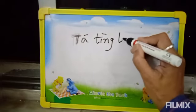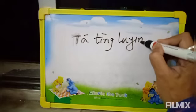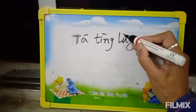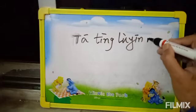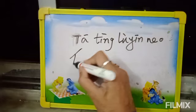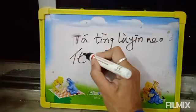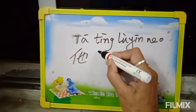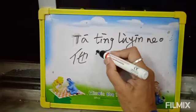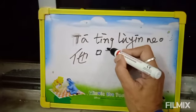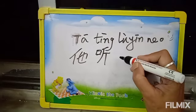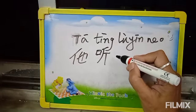The answer to this question is: Ta Thing Lu Yin Ne. I am showing you how to write it in Chinese characters — Ta, Thing, Lu Yin, Ne.